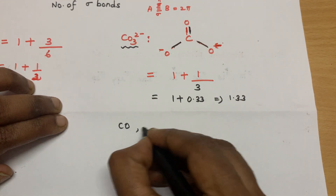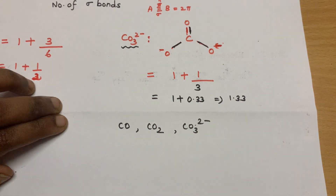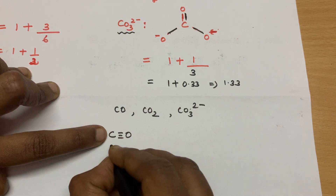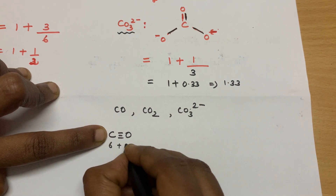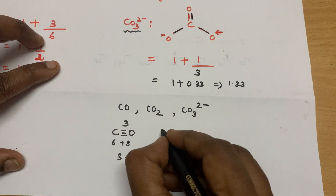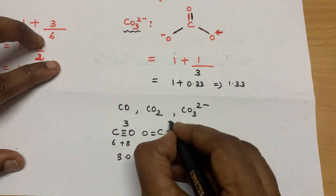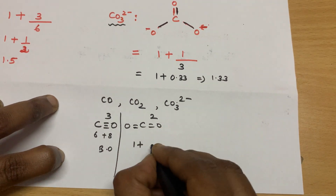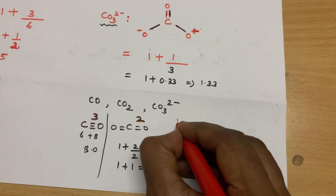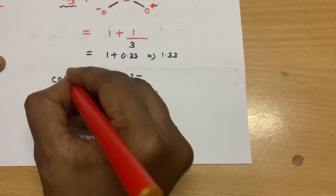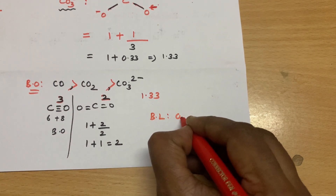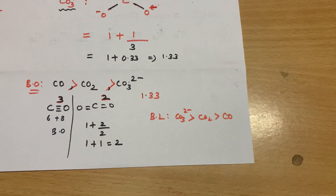A common exam question: what is the order of bond orders for CO, CO2, and CO3²⁻? CO has 14 electrons, so bond order is 3. For CO2: 2 pi bonds and 2 sigma bonds, so 1 plus 1 equals 2. CO3²⁻ is 1.33. Bond order increases: CO3²⁻ < CO2 < CO. Bond length is inversely proportional, so bond length increases in the reverse order.